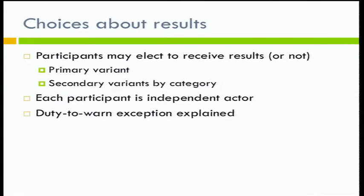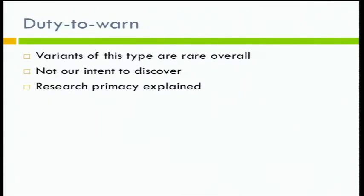Participants in our protocols can choose to receive results or not. They can choose whether or not they want to receive the primary variant and/or the secondary variants by category. So they can tell us they're not interested in learning anything where there's no treatment and it would be totally surprising. Each participant who signs the consent form is an independent actor, so even though we enroll moms, dads, and kids, a couple can make completely different choices about what kinds of results they would like to receive.